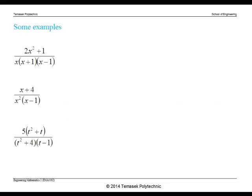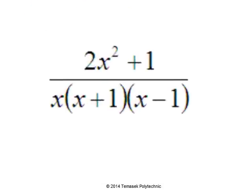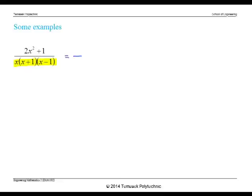Here are a few typical rational functions that can be split into their partial fractions. Notice that the denominators have been factorized. For the first fraction, to get its partial fractions, we only need to consider the denominator factors — the linear factors x, x plus 1, and x minus 1. So the partial fractions have denominators x, x plus 1, and x minus 1, with constants labeled a, b, and c in the numerators.